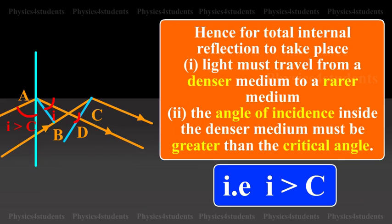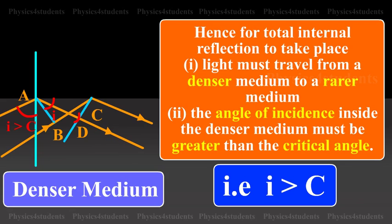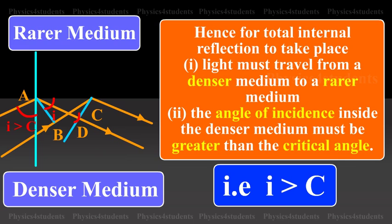Hence, for total internal reflection to take place, light must travel from a denser medium to a rarer medium and the angle of incidence inside the denser medium must be greater than the critical angle, that is i greater than C.